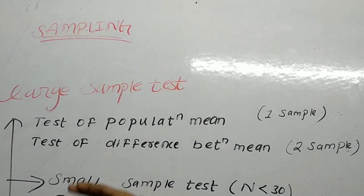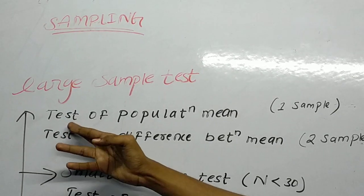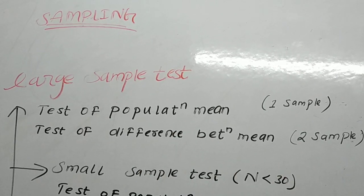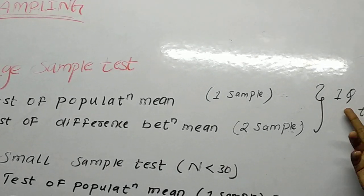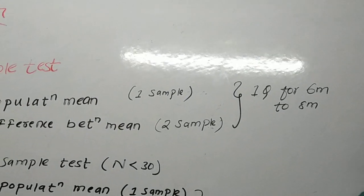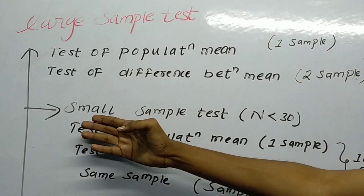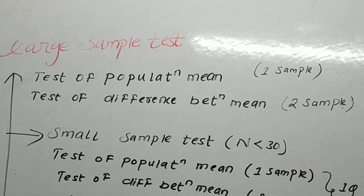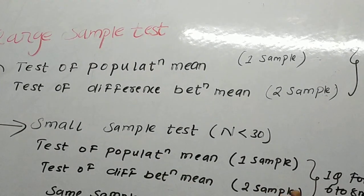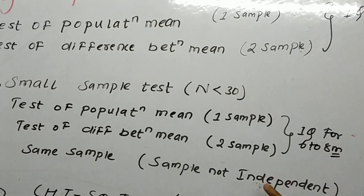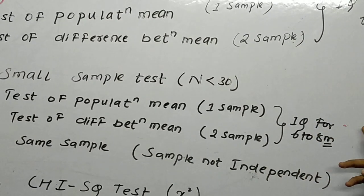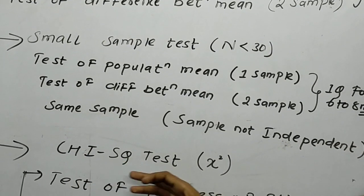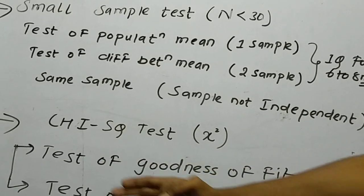In large sample tests: test of population mean for one sample, and test of difference between means for two samples — one question for six to eight marks. In small sample tests (n less than 30): test of population mean one sample, test of difference between two samples, and same sample not independent — one question for six to eight marks.